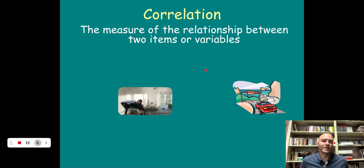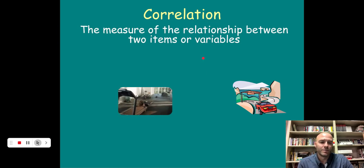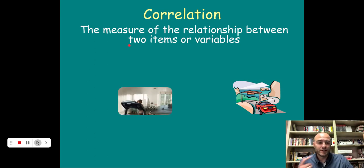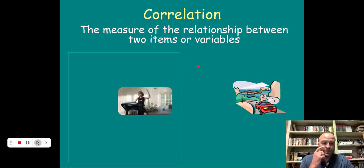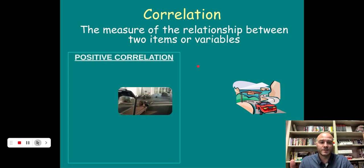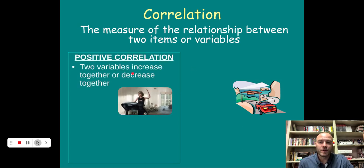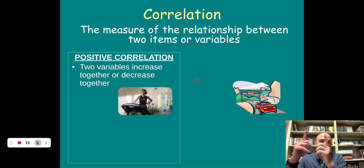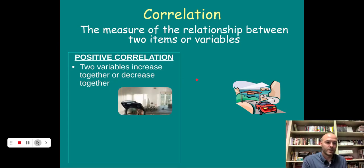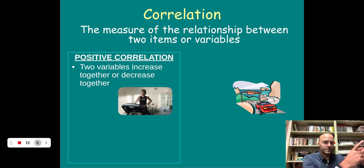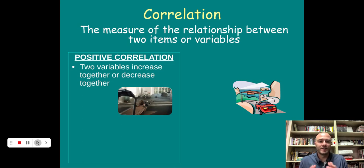First up, we're going to talk about correlation and correlational studies. The measure of the relationship between two items or variables. You're trying to determine is variable A connected to variable B. There's two types of correlation. There's positive correlation, and in a positive correlation you have two variables that increase together or decrease together. The variables move together whatever direction they're going.